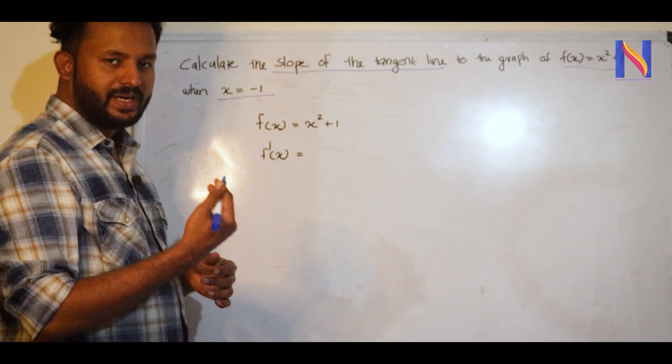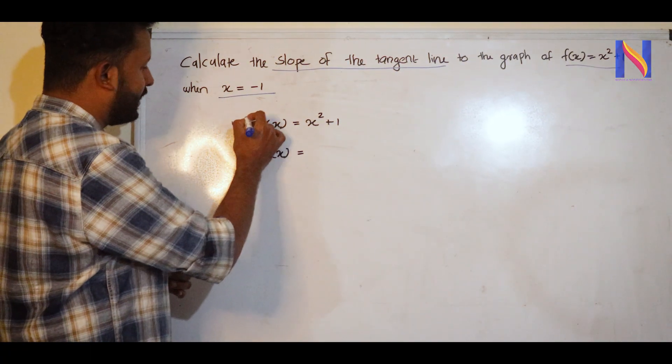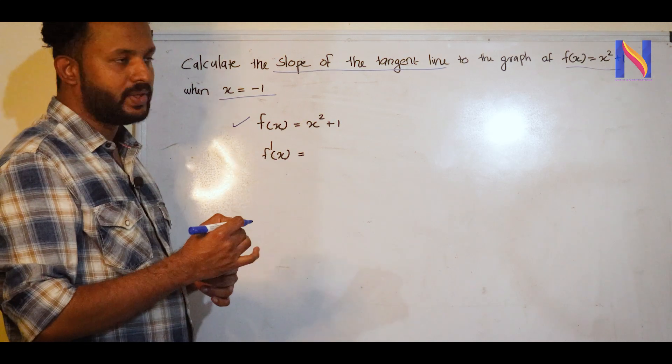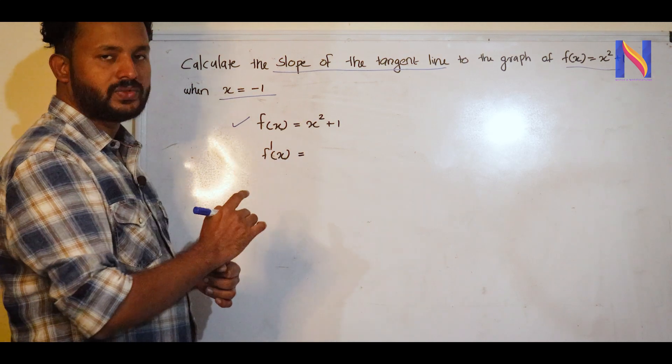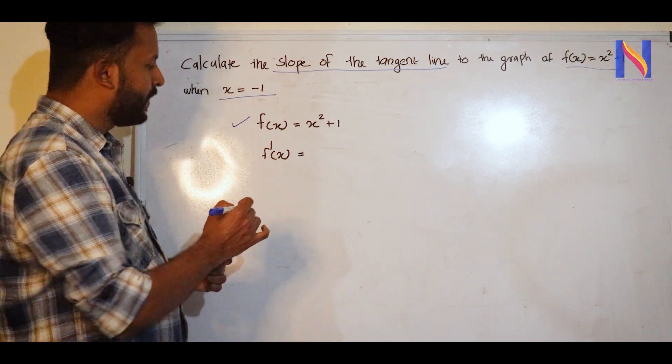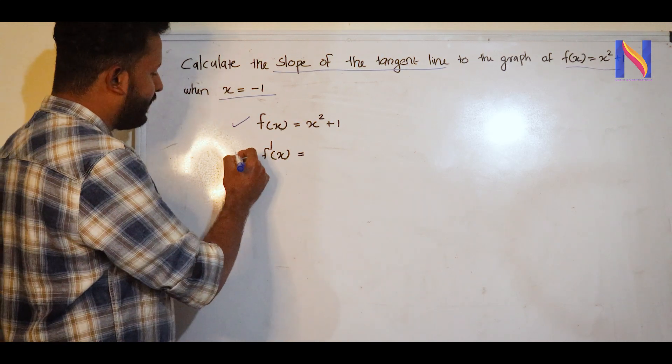This is very simple. We have the function f(x) = x² + 1. First, we find the derivative. The slope is found using the derivative.